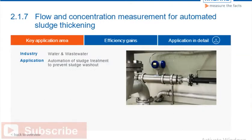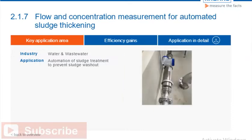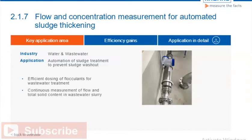In biological wastewater treatment, floating sludge can form under certain circumstances. In order to avoid pollution of the purified wastewater, the sludge must be treated quickly with flocculants to prevent sludge washout. A Coriolis mass flow meter that measures flow and total solids concentration in a single instrument replaces a laboratory analysis workflow which used to determine the required amount of flocculants.